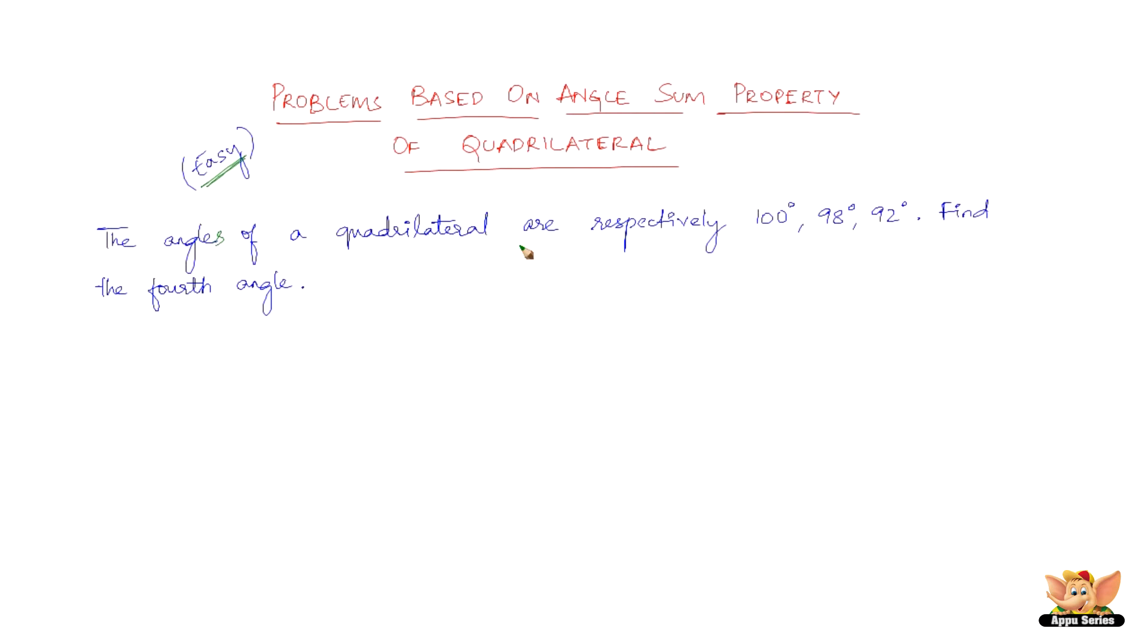Angles of a quadrilateral are respectively 100 degrees, 98 degrees, and 92 degrees. Find the fourth angle.